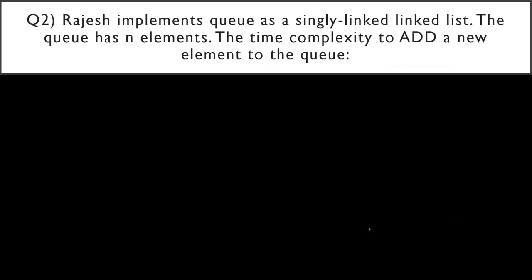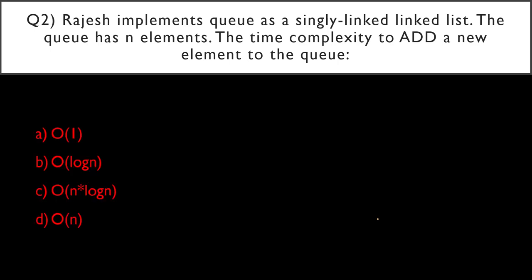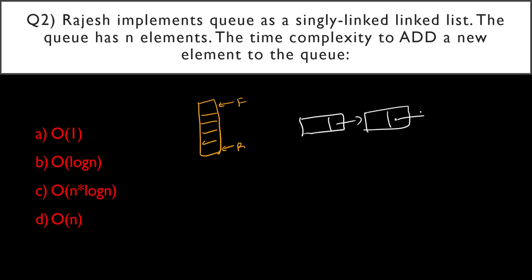Second question: Rajesh implements a queue as a singly linked list. The queue has N elements. What is the time complexity to add a new element to the queue? A queue has a front and a rear pointer, and Rajesh has implemented it as a singly linked list.